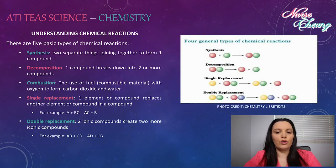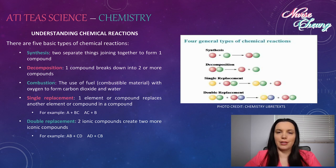There are five basic types of chemical reactions. Synthesis: two separate things joining together to form one compound. Decomposition: one compound breaks down into two or more compounds. Combustion: the use of fuel, a combustible material, with oxygen to form carbon dioxide and water. Single replacement: one element or compound replaces another element or compound in a compound. For example, A plus BC is equal to AC plus B. Or double replacement: two ionic compounds create two or more ionic compounds. For example, AB plus CD is equal to AD plus CB.